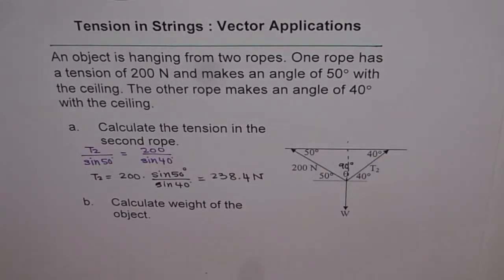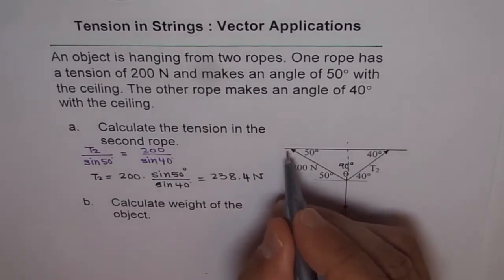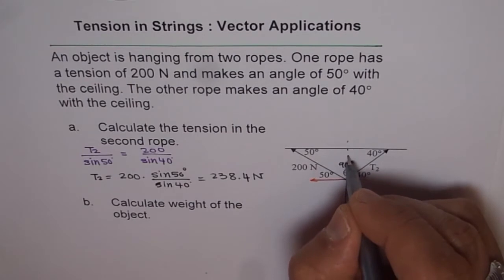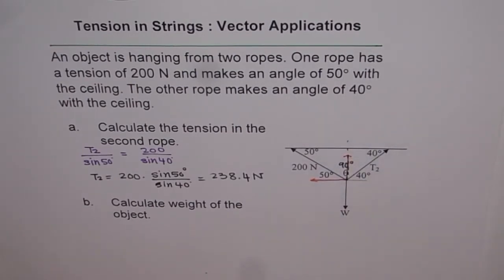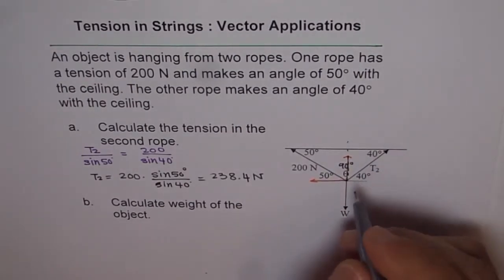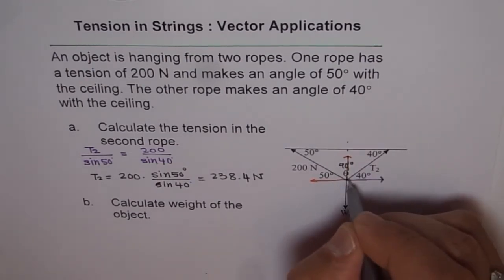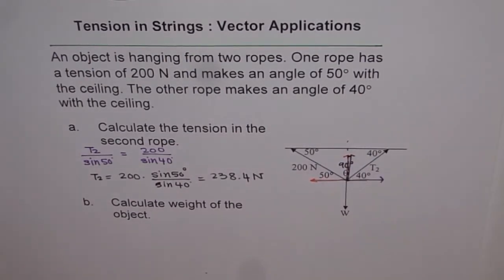T1 can be resolved as a component along horizontal and as vertical. Similarly, T2 can be resolved with a component along horizontal and a component along vertical. If they are in equilibrium, then these two components will be same.